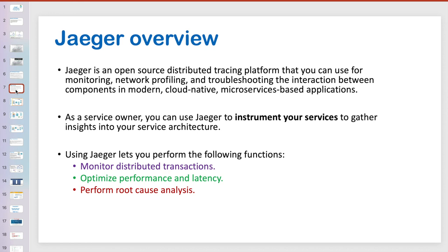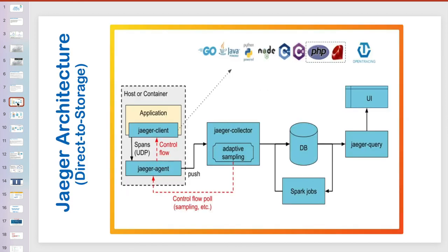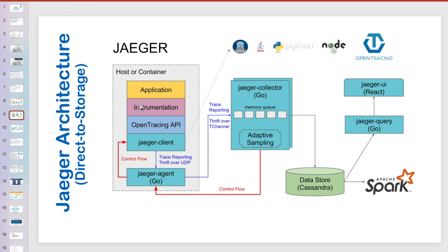Jaeger is an open-source distributed tracking platform where you can monitor distributed transactions, optimize performance, and perform root cause analysis. However, Jaeger will only work if you have already taken care of instrumentation of your services — meaning something should already be in your code base that can track all the communications happening. For that, we will use the OpenTracing API, and on top of that Jaeger will work.